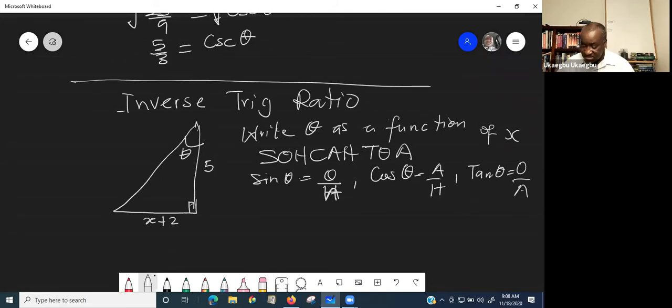So now look at the triangle that you are given. It says that, look at where your theta is. And the side that is facing the 90 degree is the hypotenuse. So obviously, this is the hypotenuse right here.